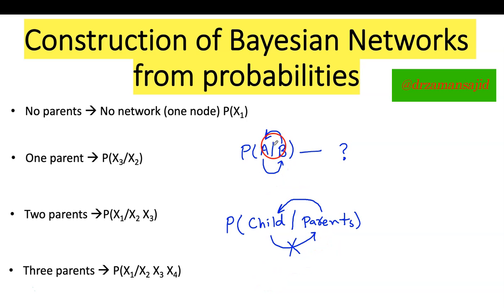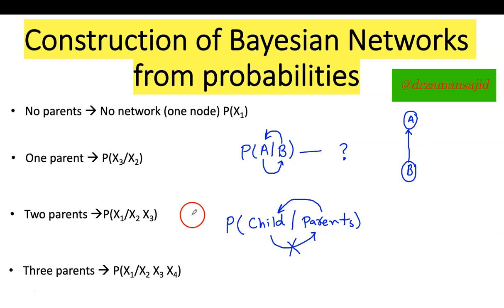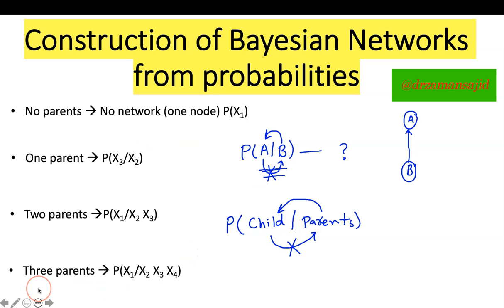We are going to learn how we develop the link — either it should be from B to A, or from A to B. If I have two nodes, say node A and node B, and I want to decide which direction to draw the arrow, just keep in mind: parents can give birth to their child, the child cannot give birth to their parents. So the direction will be from parent to child node.